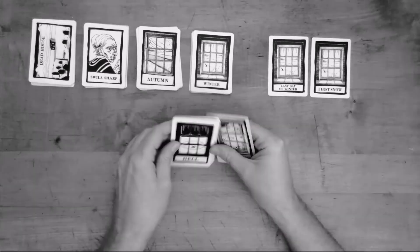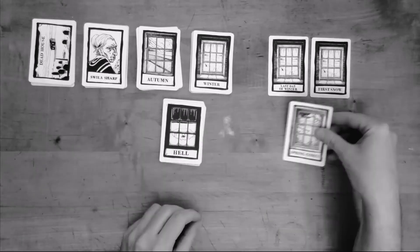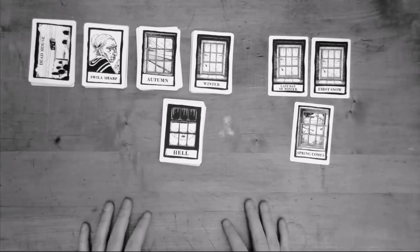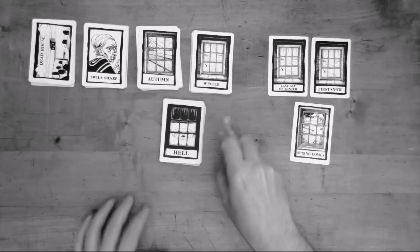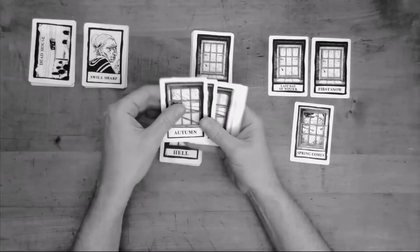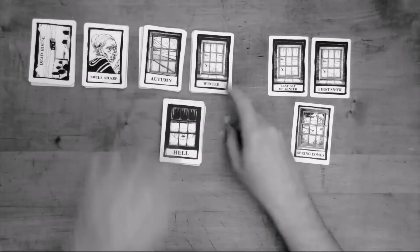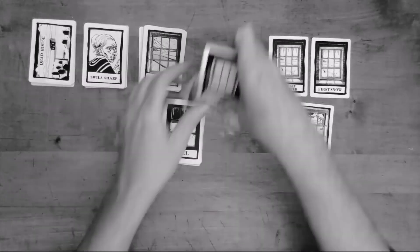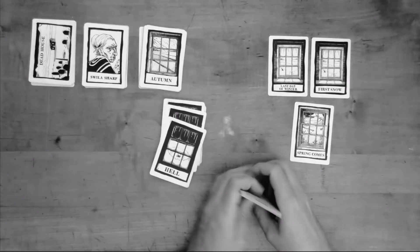We're going to take some cards out of here for replay value. So a couple of cards, two cards from autumn, two cards from winter, and four cards from hell. Just discard those, set them aside. You're not going to need them.